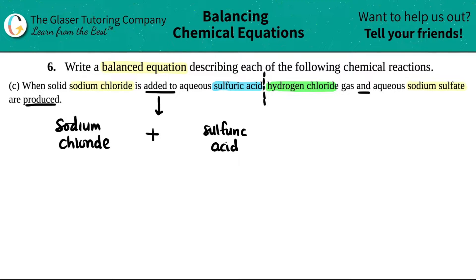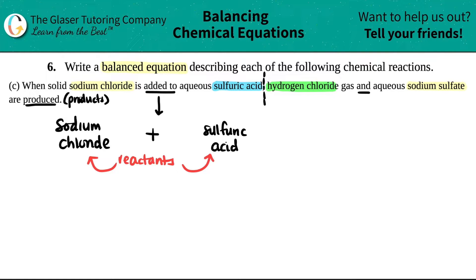If you're produced, that means you are on the product's side — you are the product. But if you're talking about products, that means you have to have a reactant side, and that means you have to have a yield sign. The starting material is always your reactants. So I have two reactants here: sodium chloride reacting with sulfuric acid, and that will yield.